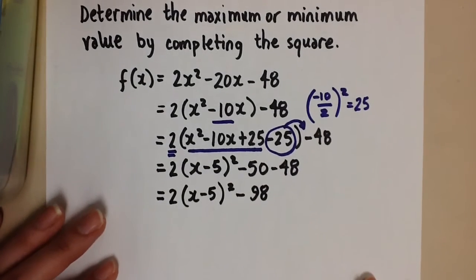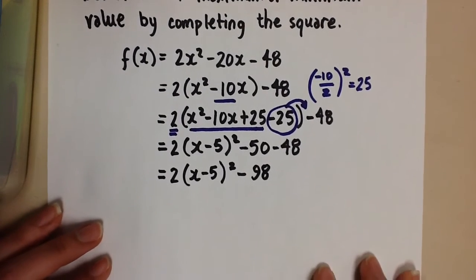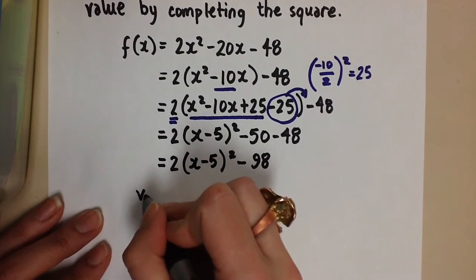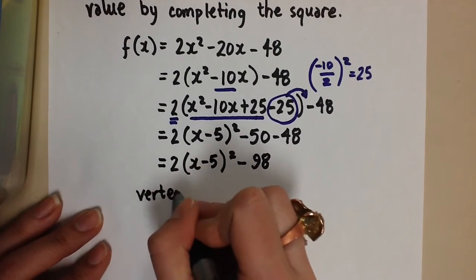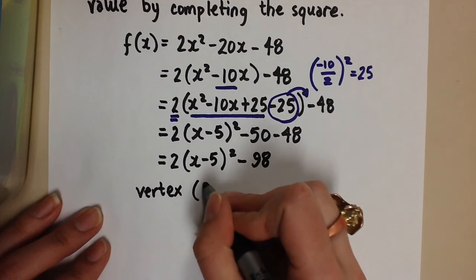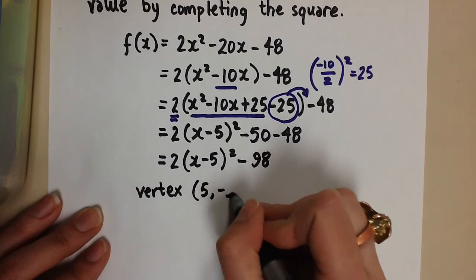Now the equation is in vertex form, and we can read the vertex of this parabola right from this equation. It will be 5 and negative 98.